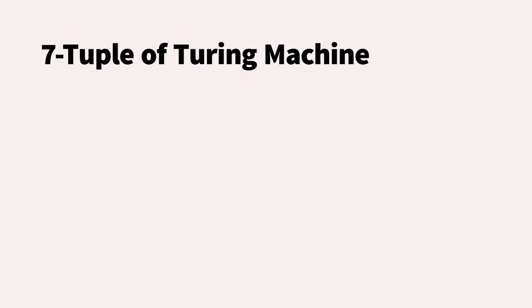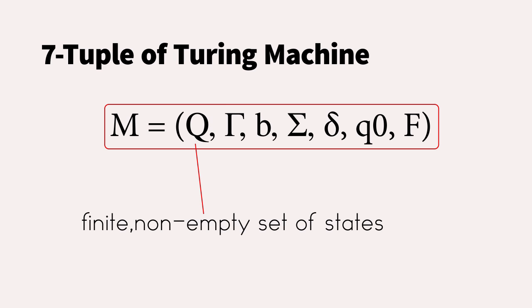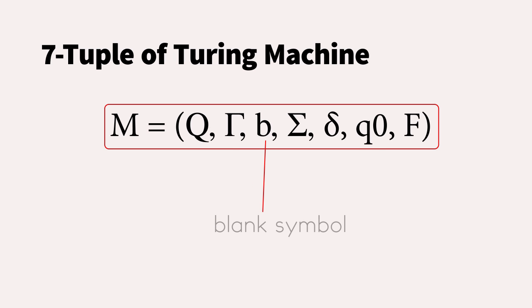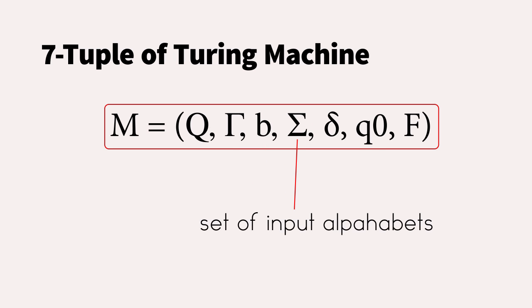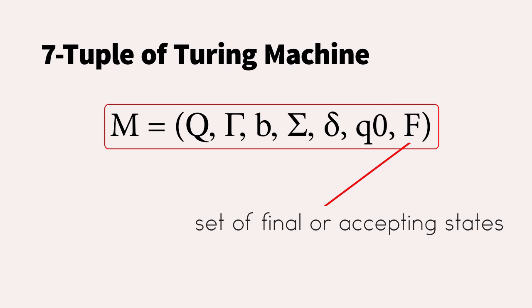The 7-tuple of a Turing machine consists of: a finite, non-empty set of states; a finite, non-empty set of tape alphabets; a blank symbol; a set of input alphabets; a transition function; an initial state; and a set of final or accepting states.